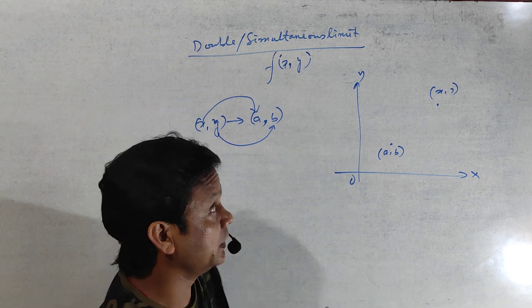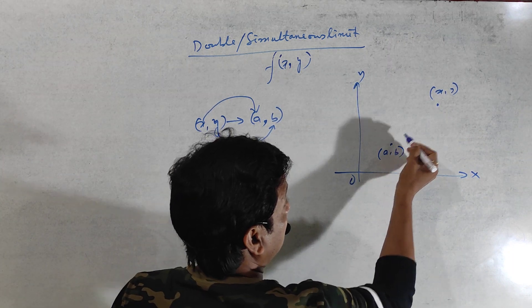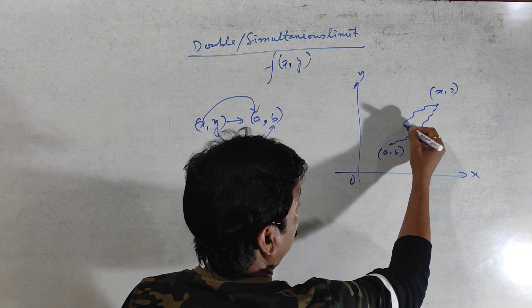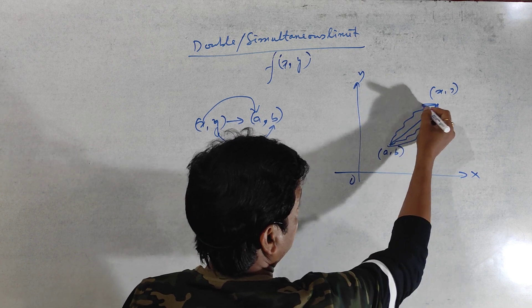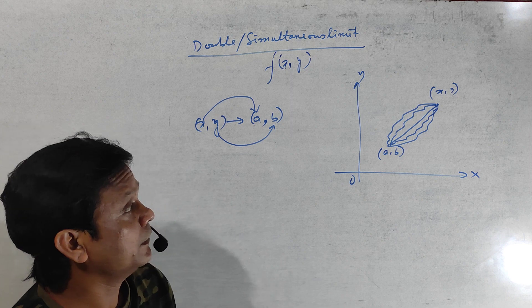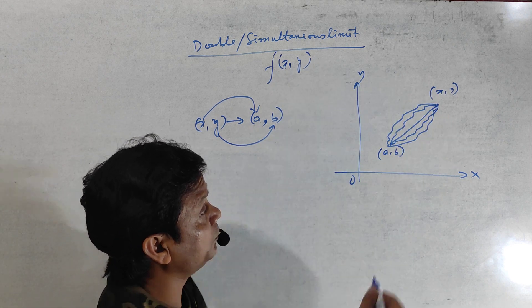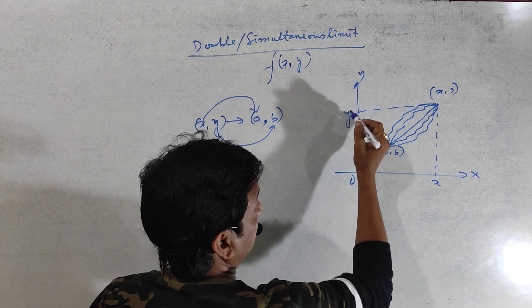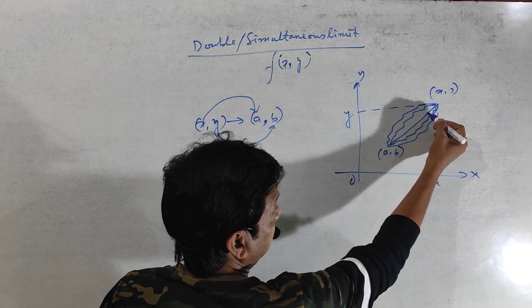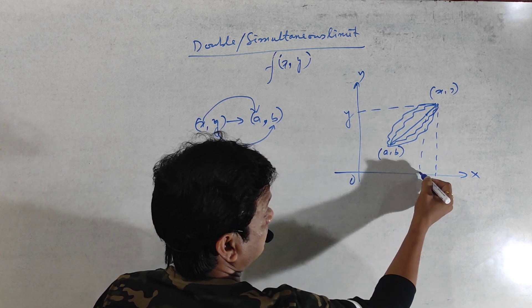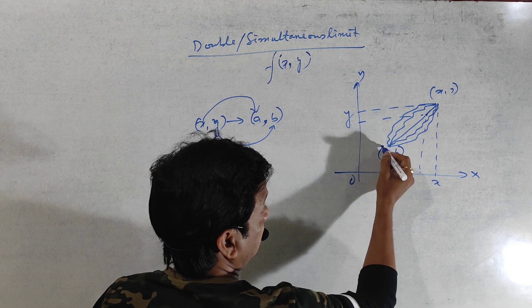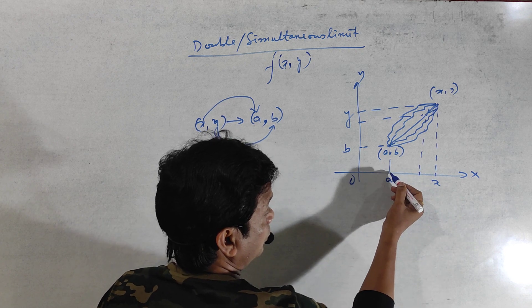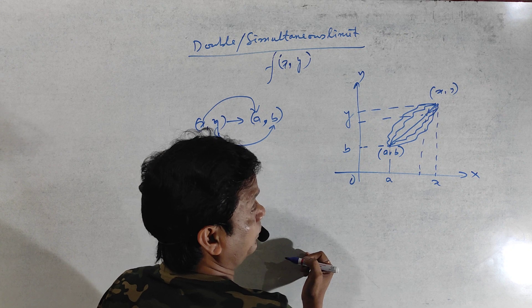Today I am telling you about simultaneous limit or double limit. When x approaches a, at the same time y approaches b. Graphically, this means you will move in this way — it could be a straight line or a curve. This point is a, this point is b. X comes closer to a as long as y also comes closer to b.